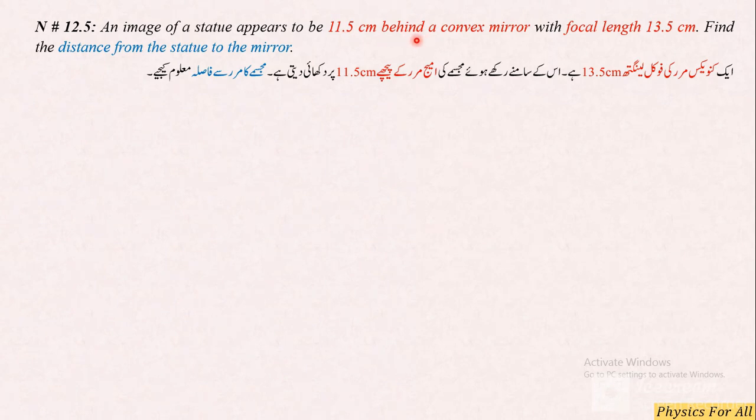Behind the mirror ka matlab yeh hua ke image virtual hogi, aur is mirror ki focal length 13.5 cm hai. Hum ne is statue ka, is mujassame ka mirror se distance calculate karna hai. To given hai hamare paas mirror ki focal length 13.5 cm, aur choonke convex mirror tha is liye iski value negative bhi rakhi gayi.